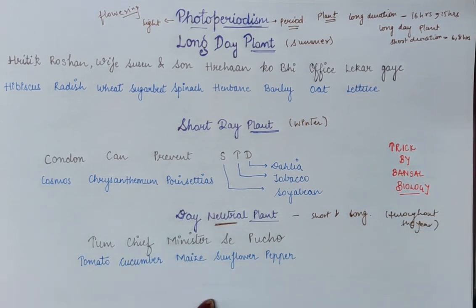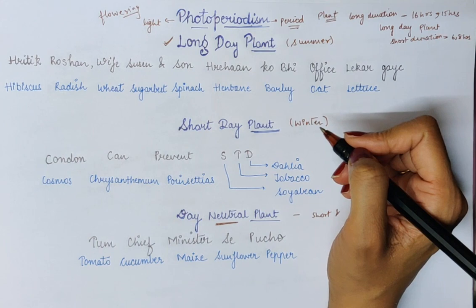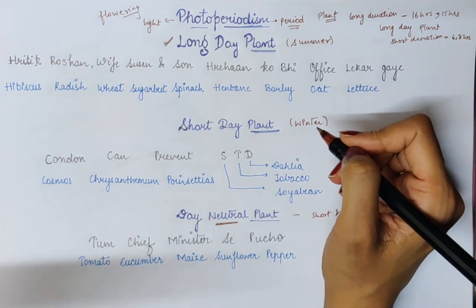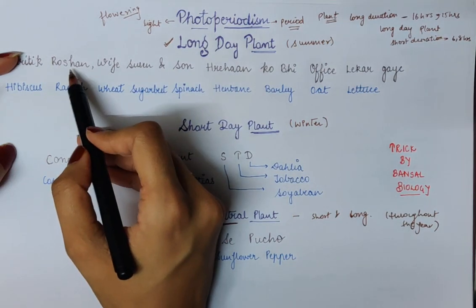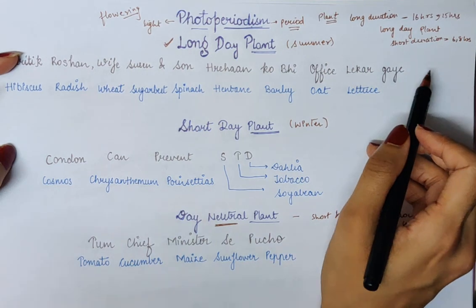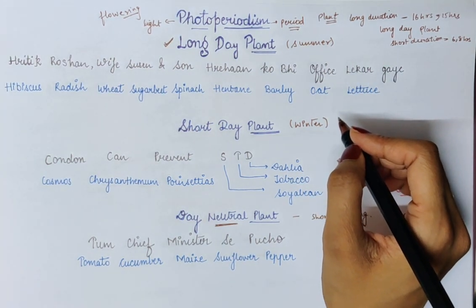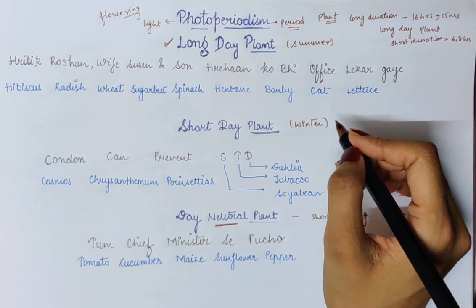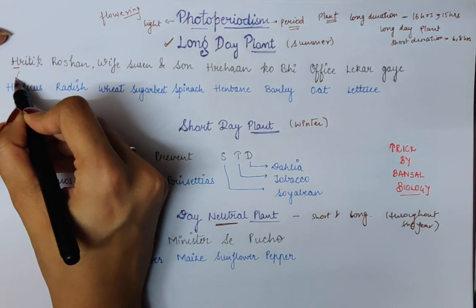So there are some mnemonics for the examples of long day, short day, and day neutral plants. For long day plants, the mnemonic is related to Hrithik Roshan: 'Hrithik Roshan, wife Suzanne and son Rihan ko bhi office le kar gai.' So from Hrithik, 'H' gives us hibiscus.